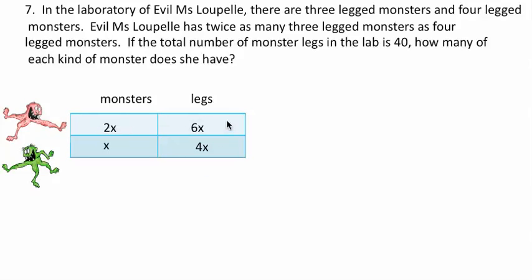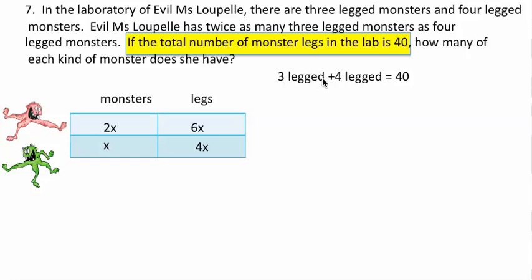So that's the number of legs that we've got in the room. But we're also told the total number of monster legs in the lab is 40. So let's write that. The three-legged monsters' legs plus the four-legged monster legs is equal to 40.